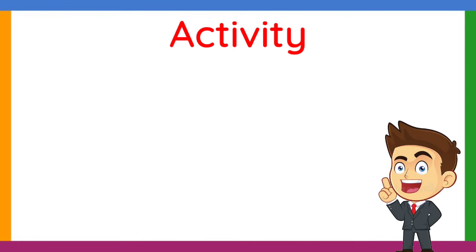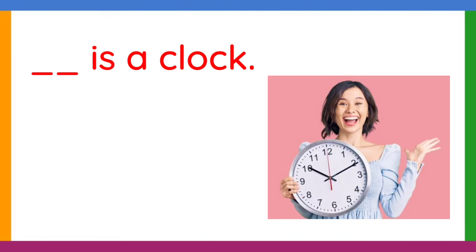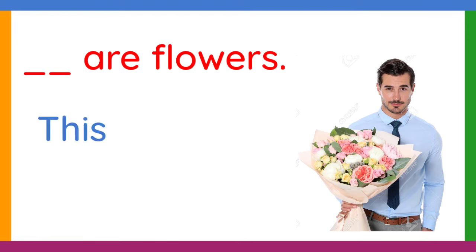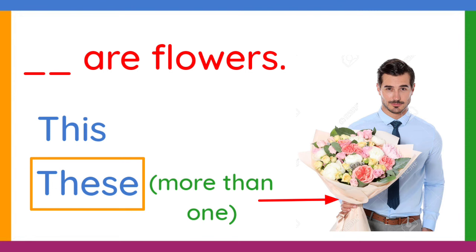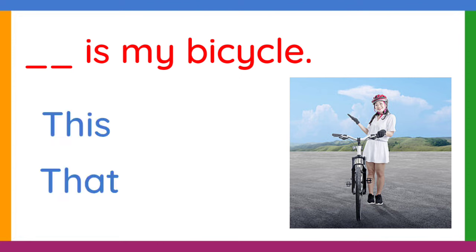Are you ready for the activity? Great! Your task is to choose the correct demonstrative pronoun to complete the sentence. First: blank is a clock — this or that? The answer is this, because the person is holding the clock and it is only one.